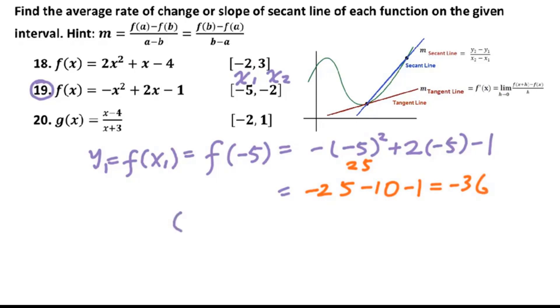Therefore, negative 5, negative 36. That is x1, y1.